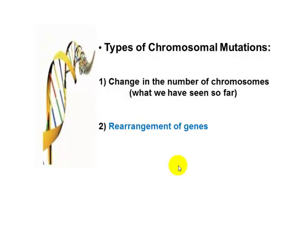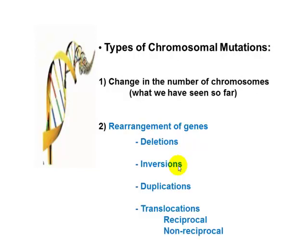Now let's look at the types of chromosomal mutations. One type involves having a different number of chromosomes — you can have extra chromosomes, as in the case of trisomy, or you can have all sets of chromosomes that are not supposed to be there, or chromosomes can be missing, as in Turner syndrome. Besides those additions or deletions of entire chromosomes, you can also have changes in specific chromosomes: rearrangements, deletions, inversions, duplications, or translocations.